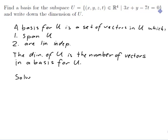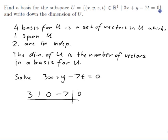So we're going to solve 3x plus y minus 7t equals 0. Putting that in a matrix: 3 for x, 1 for y, 0 for z, and -7 for t, with answer 0. I want to row reduce to get as many columns of the identity matrix as possible. With one row, a column is just a single number, so I'm looking for a 1. There's already a 1 in the y column, so that's my pivot, and x, z, t are the 3 free variables.